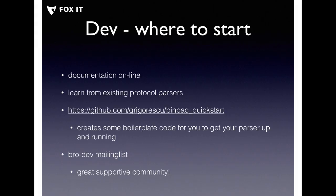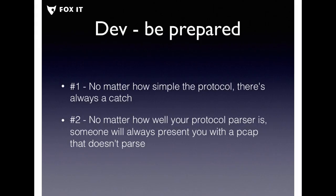If you want to start building protocol parsers, there's documentation online. I found it very helpful to learn from existing protocol parsers by looking at their code. The Binpac quick start was mentioned yesterday — it generates boilerplate code so you can immediately have a compiling parser. There's also a very supportive community on the BroDev mailing list. You also have to be prepared for two rules of network protocol parsing: no matter how simple the protocol, there's always a catch; and no matter how good your parser, someone will always come up with a PCAP that doesn't work.